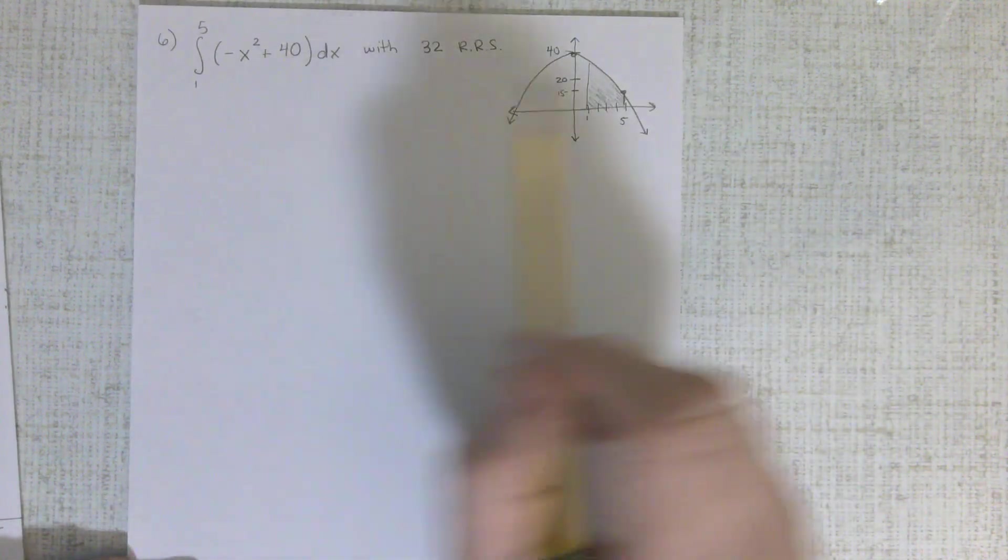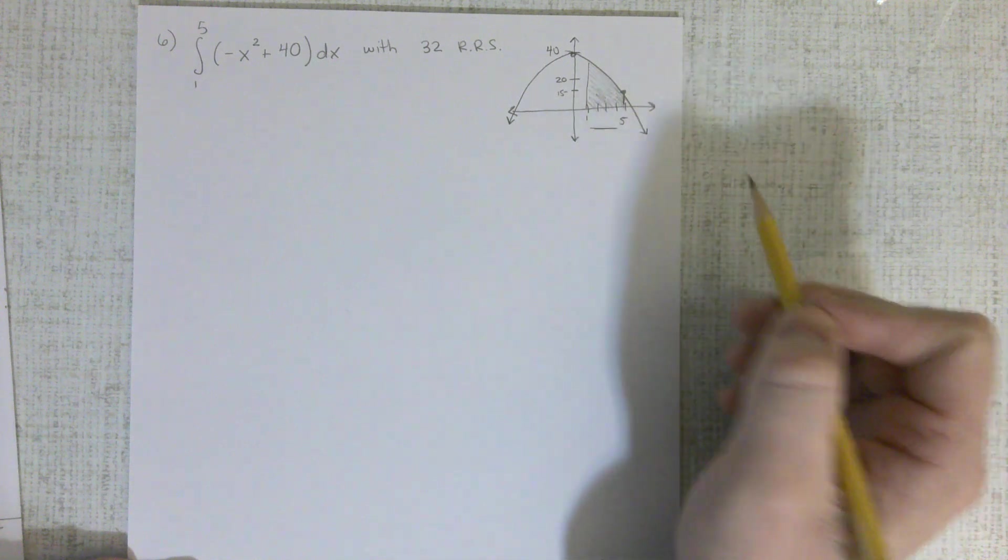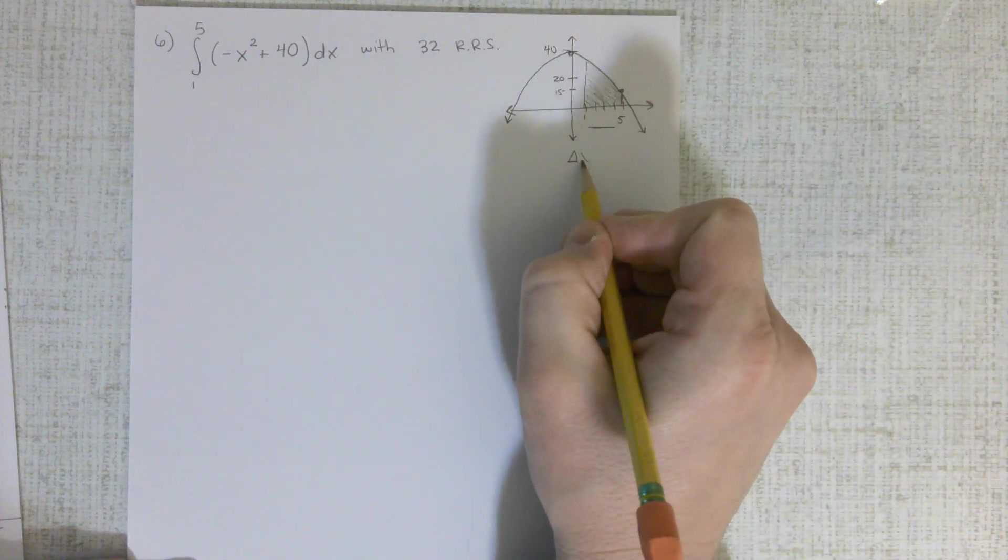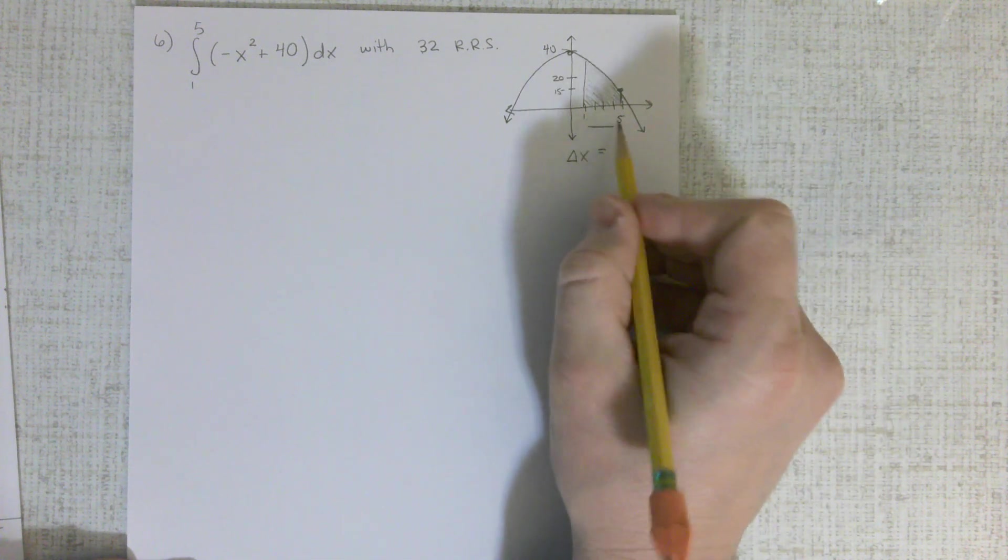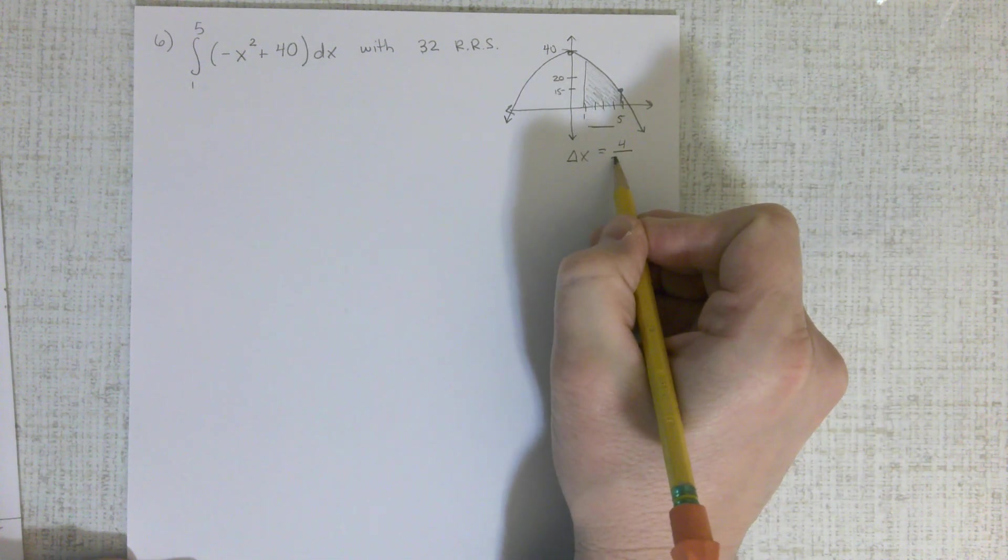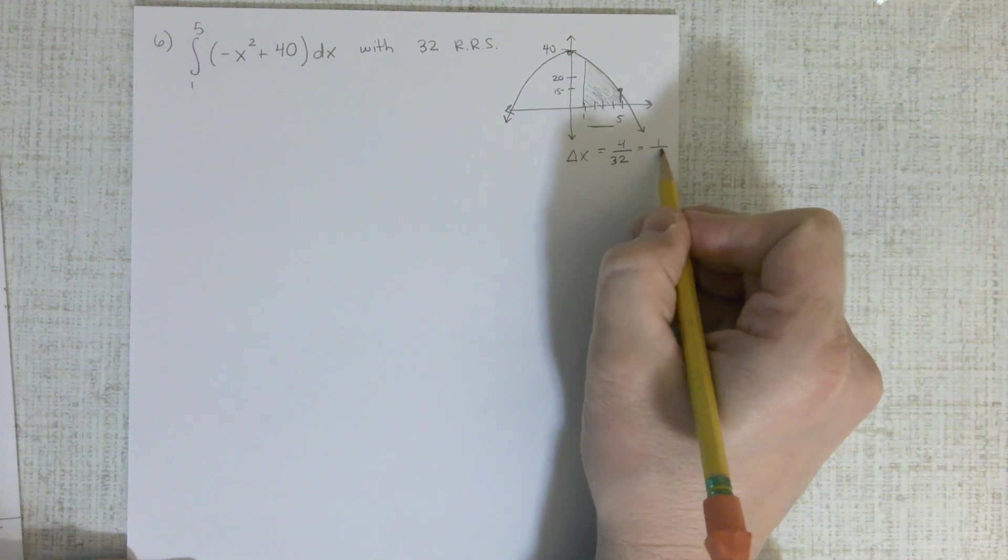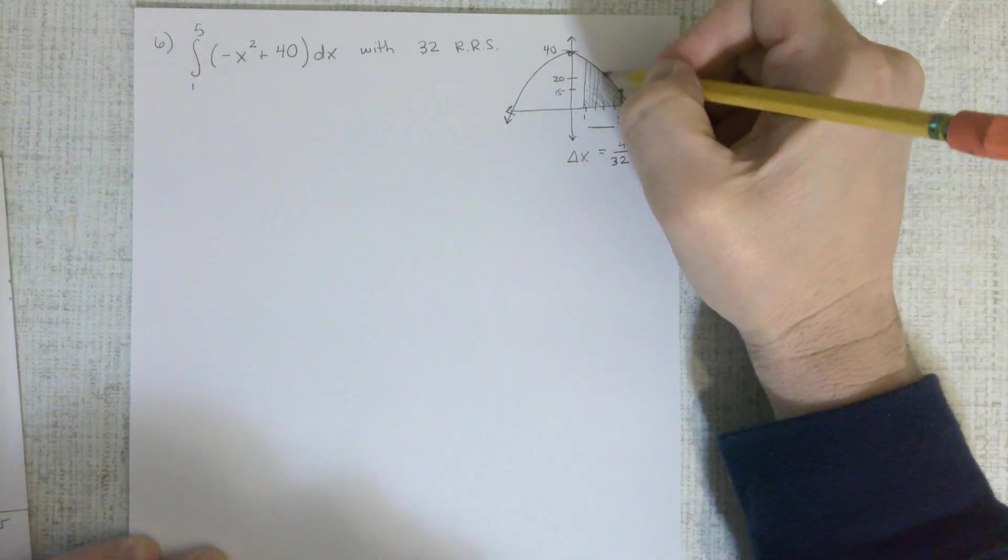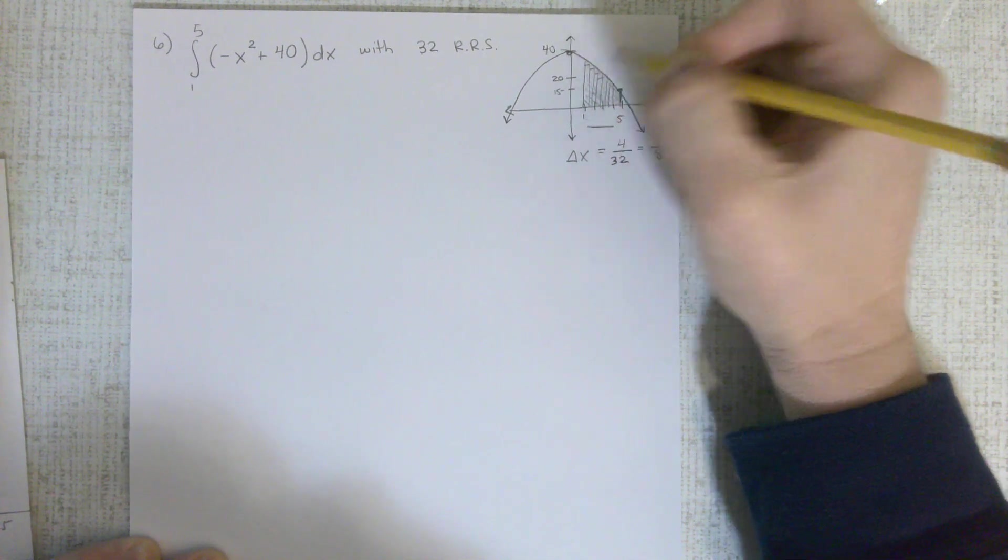We have an area here, which is a parabola facing downward. We're going to go from 1 to 5, find the area. 32 rectangles, so my delta x is 4 is my width, but I'm going to divide that 4 up into 32 times. So that's going to be 1 eighth if I reduce it. That's the width of each rectangle.